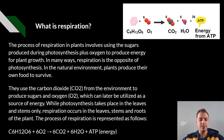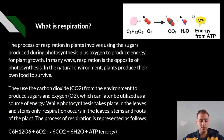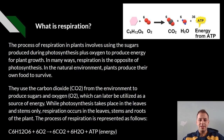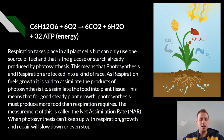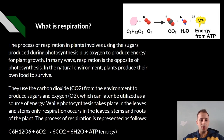While photosynthesis takes place in the leaves and stems only, respiration occurs in the leaves, stems and roots of the plant. The process of respiration is represented by the following chemical equation: C6H12O6 plus 6O2 equals 6CO2, 6H2O and ATP energy. When we break it down, what we have is our glucose and oxygen, which then forms carbon dioxide, water and ATP energy.